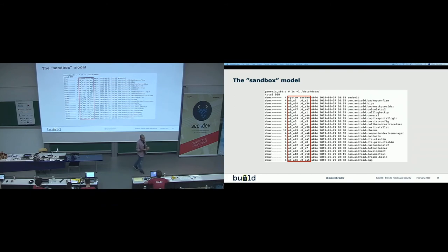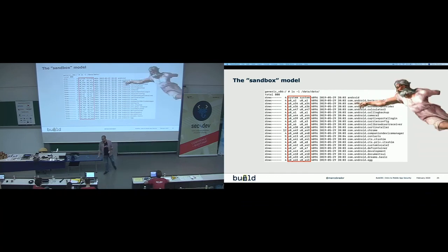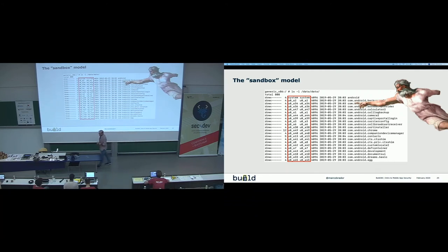When we root our phone or jailbreak our iPhone, what we're doing is using a privilege escalation exploit to allow software on the device to run as the root user. The root user is a special user in the Unix system that is not bound by these sandbox rules. We are allowing someone to become god on our system. When someone can run software as root, they can do whatever they want — they are not bound to most of the operating system's security measures, and they can escape the sandbox.